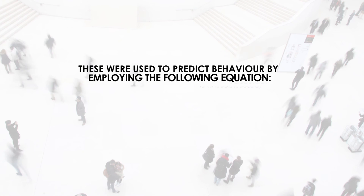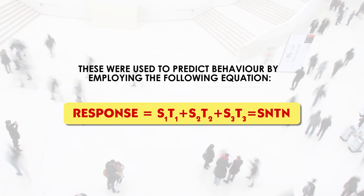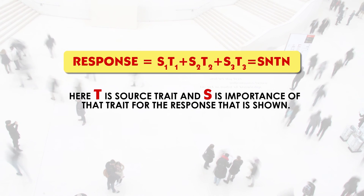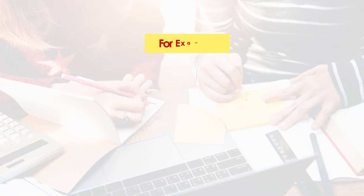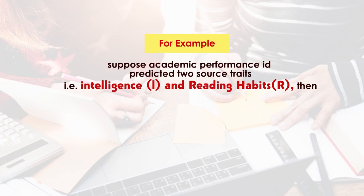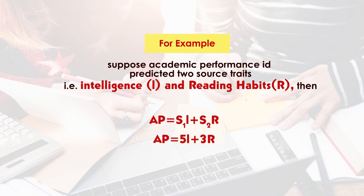Cattell obtained a total of 16 source traits used to predict behavior by employing the following equation: the response equals S1·T1 + S2·T2 + S3·T3 + ..., where T is the source trait out of those 16 source traits, and S is the importance of that trait for the response. For example, if academic performance is predicted by intelligence and reading habits, then AP = S1·I + S2·R. If the ratio is 5 to 3, then AP = 5I + 3R — meaning 5 is the importance of intelligence and 3 is the importance of reading habits in determining academic performance.